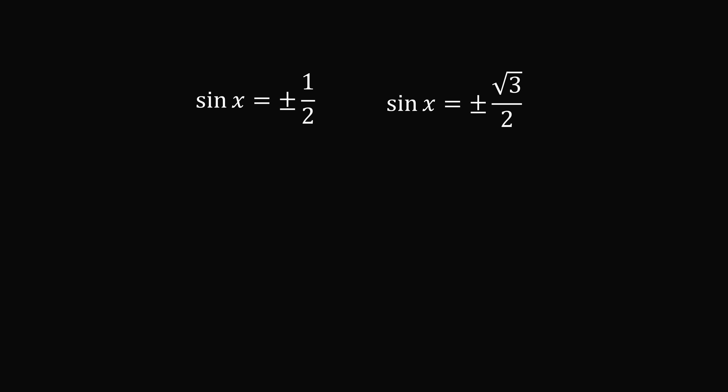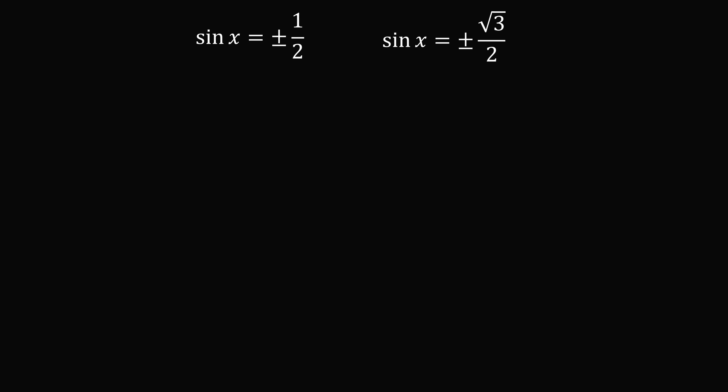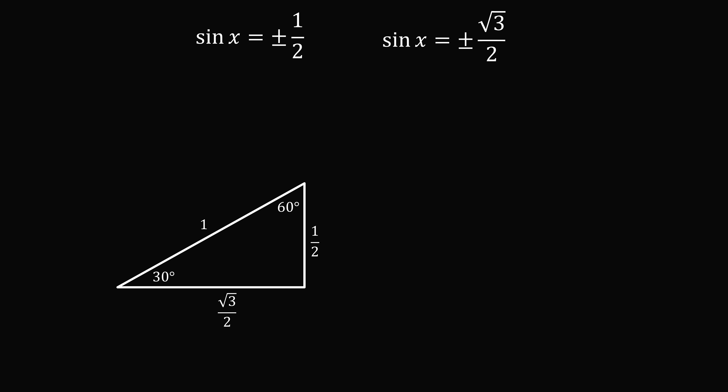As it works out, these are special values. We have our 30-60-90 right triangle. Sine of 30 degrees is equal to 1 half, and sine of 60 degrees is equal to root 3 over 2. So one solution: sine x is equal to 1 half gives us x is equal to 30 degrees.